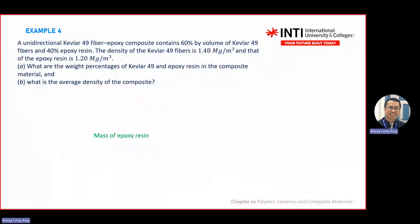This example involves Kevlar 49 fiber epoxy composite consisting of 60% by volume Kevlar 49 fiber and 40% epoxy resin. Fiber and resin form the composite. To make a composite you need at least two things: a filler and a matrix. The matrix is the resin — the plastic or the glue. The density of Kevlar and epoxy resin are given. The question asks: what is the weight percentage of Kevlar and epoxy resin, and what is the average density of this composite?